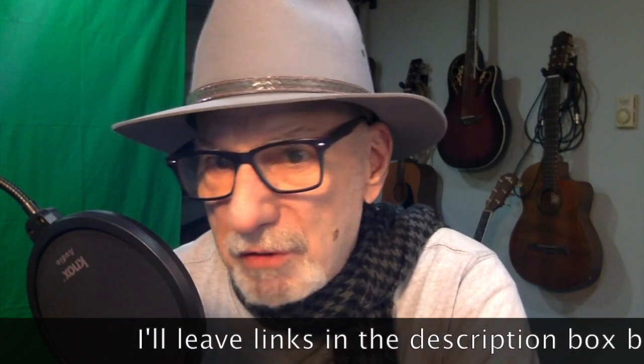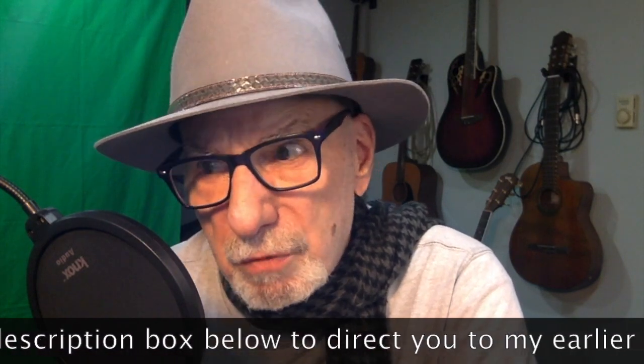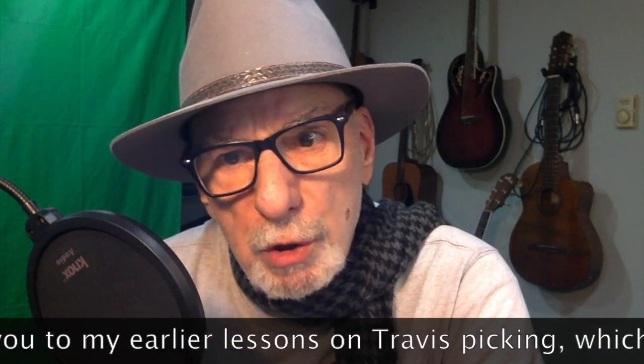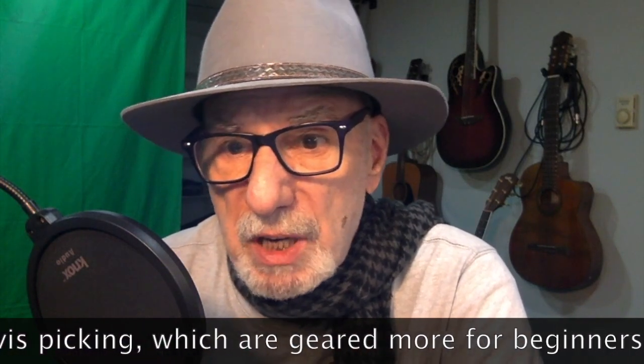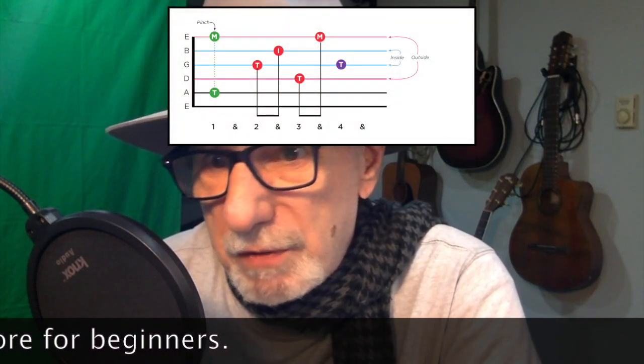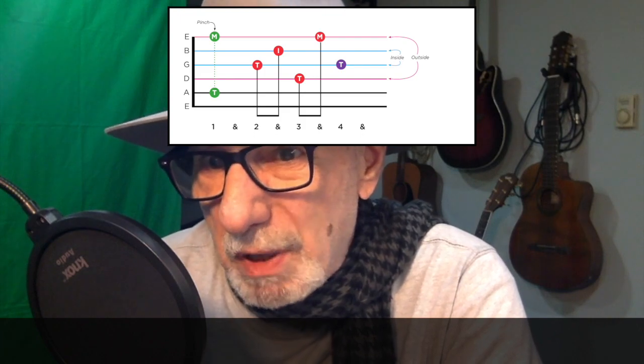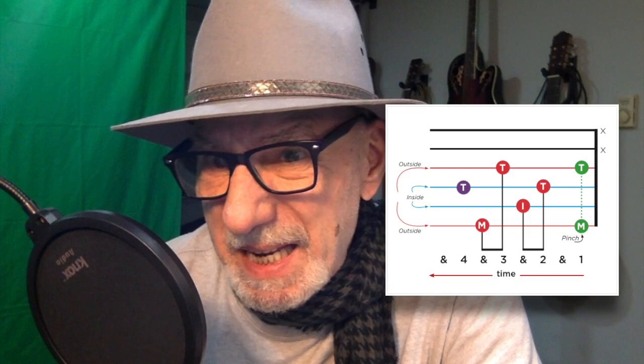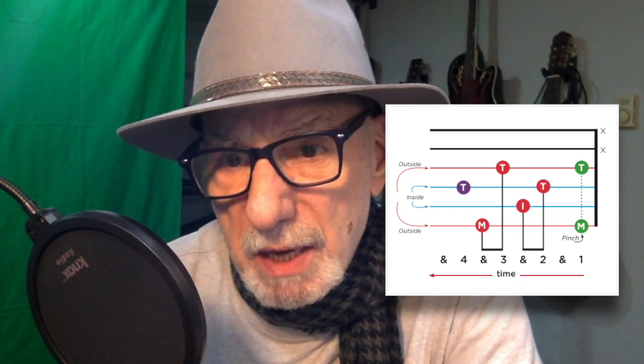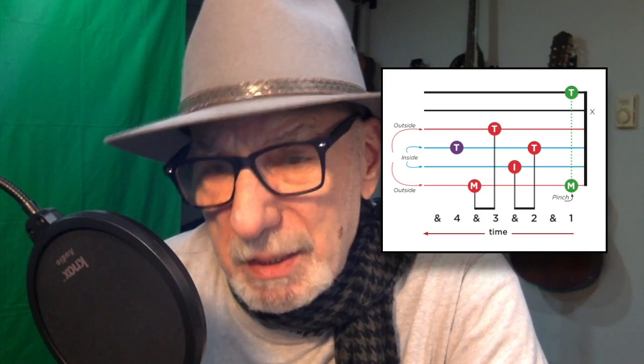So David, I hope this answers your questions about when to use a four string, five string, or six string Travis style finger picking pattern. It all depends on the chord. If it's an A minor, it's a five string chord. If it's a D and you're just playing it on those four high strings, the D G, B, and E strings, then it's a four string pattern. If you're playing a barred F chord, or an E minor, or an E major, that's a six string pattern.